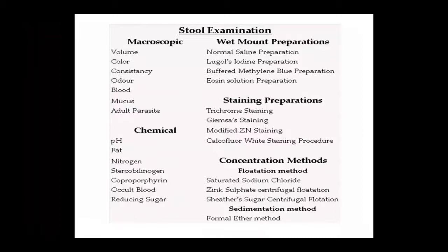For microscopic examination, wet mount preparation methods include: normal saline preparation, Lugol's iodine preparation, buffered methylene blue preparation, and eosin solution preparation. Staining methods include: trichrome staining, Giemsa staining, modified Ziehl-Neelsen staining, and staining procedures using Calcofluor white. Concentration methods include flotation and sedimentation: flotation uses saturated sodium chloride, zinc sulfate centrifugal flotation, and Sheather's sugar centrifugal flotation; sedimentation uses the formal-ether method.